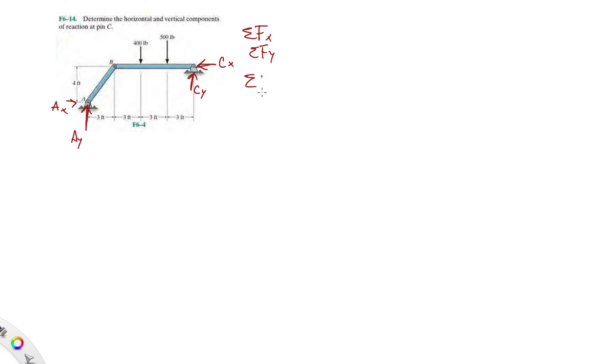You can do the moments about A, but you'll still end up getting two unknowns, so you can't really solve it this way. What the frames and machines section tells you is to break this diagram into smaller components and analyze each individual piece.